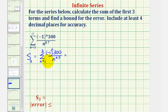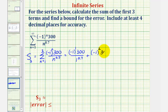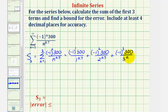Notice when N is one, we'd have negative one to the first times 300 divided by one to the 0.7, plus when N is two, we have negative one to the second times 300 divided by two raised to the power of 0.7, plus when N is three, we have negative one to the third times 300 divided by three raised to the power of 0.7.